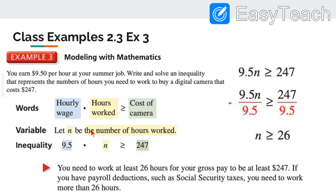So we have, and we just use n. Again, you could use x or any other variable. So 9.5, the money per hour, times the number of hours needs to be greater than 247. So over here, we show how to solve that. We divide both sides by 9.5. We're left with n is greater than or equal to 26. This means that to earn $247, you are going to need to work at least 26 hours. Now, obviously, with things like taxes, you might have to work a little bit more.